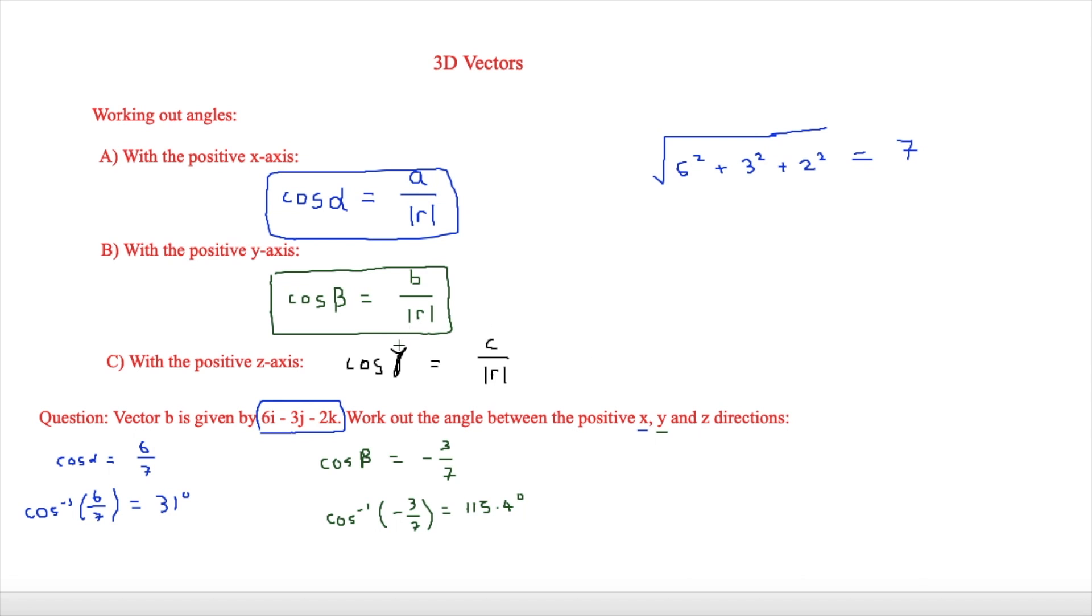And then finally we'll be looking at the z direction. So this is this one here. So cos gamma this time. And then cos gamma is equal to c, so c is minus 2 so it's going to be minus 2 over 7. So cos minus 1 to the minus 2 over 7 is equal to 106.6 degrees. And that's in the z direction. Sometimes you may just be asked for one direction but this is an example of where we can use each of the directions.